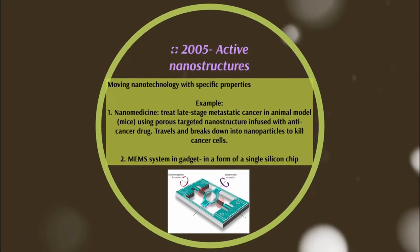The year 2005 is the era for active nanostructures. Active nanostructures are moving nanotechnology with specific properties. Examples include: first, nanomedicine, which treats late-stage metastatic cancer in animal models such as mice using porous targeted nanostructures infused with anti-cancer drugs that travel and break down into nanoparticles to kill cancer cells. Second, MEMS systems — microelectromechanical systems in the form of a single silicon chip.